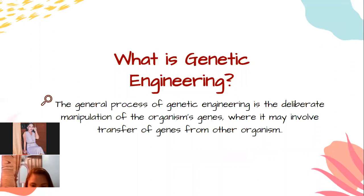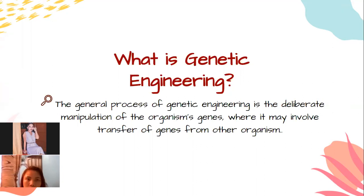Let's define what genetic engineering is. The general process of genetic engineering is the deliberate manipulation of an organism's genes, where it may involve the transfer of genes from other organisms. As a principle of biotechnology, genetic engineering is a process of using recombinant DNA or rDNA — molecules formed by laboratory methods of genetic recombination — to alter or change the genetic makeup of an organism.